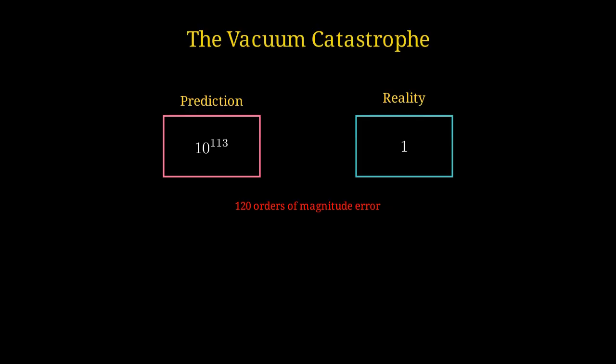Welcome to one of the most embarrassing problems in physics: the vacuum catastrophe. Quantum theory predicts a value 10 to the 113 times larger than what we observe. This is the worst prediction in the history of physics.